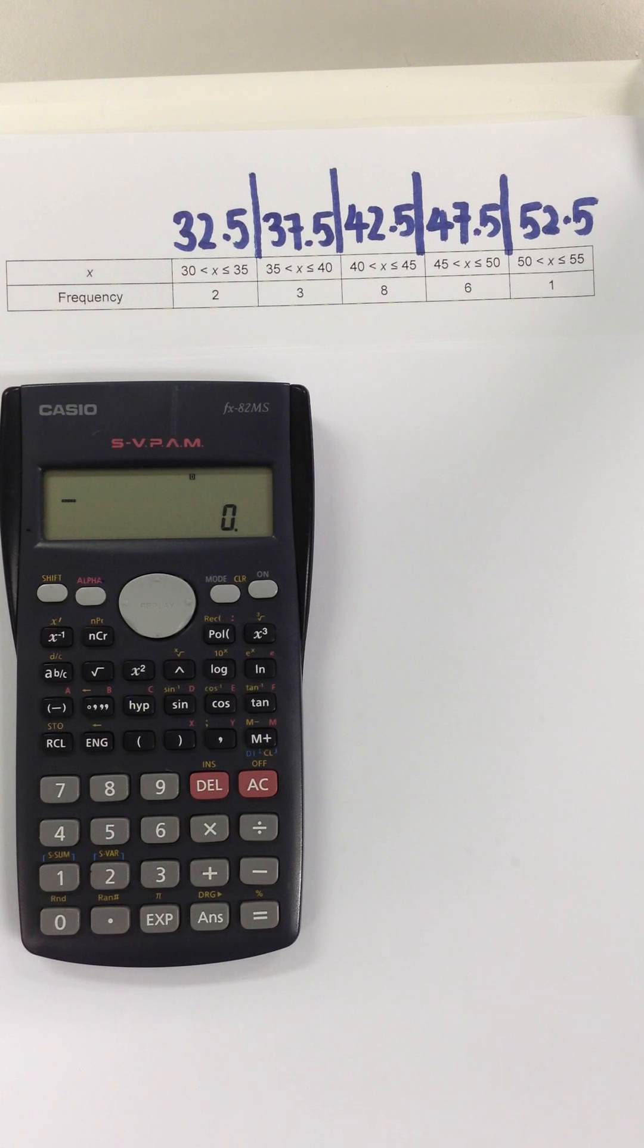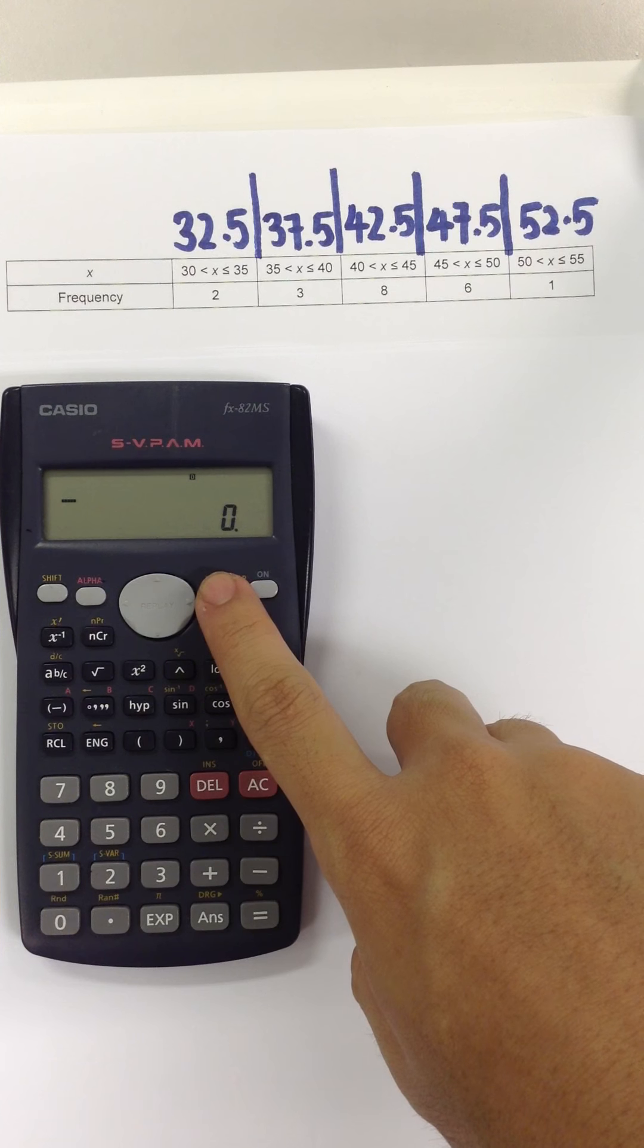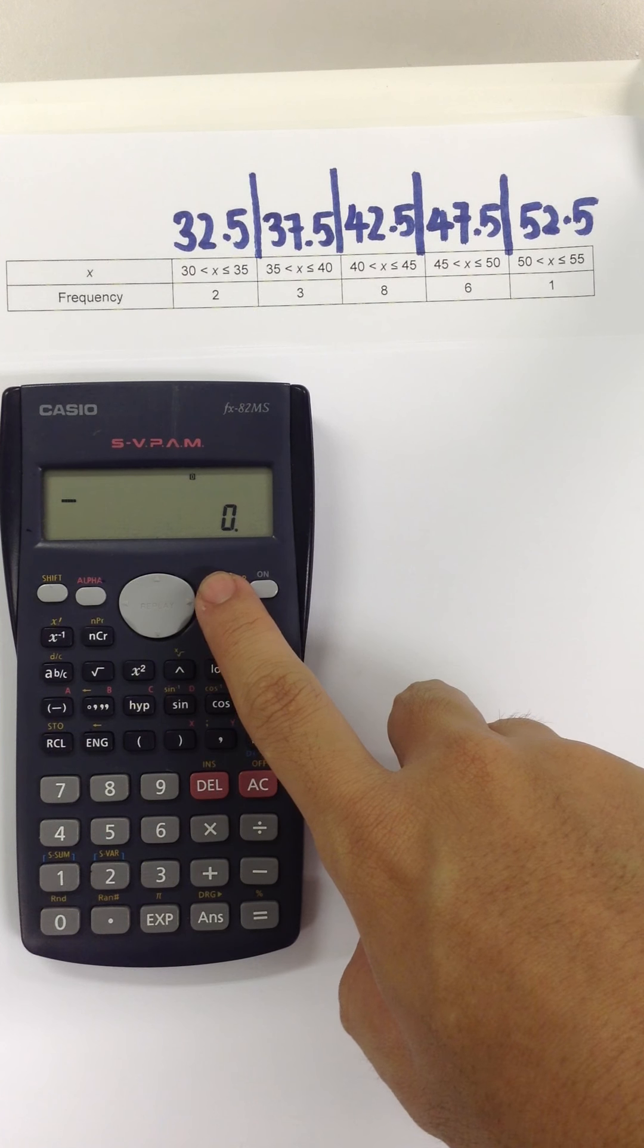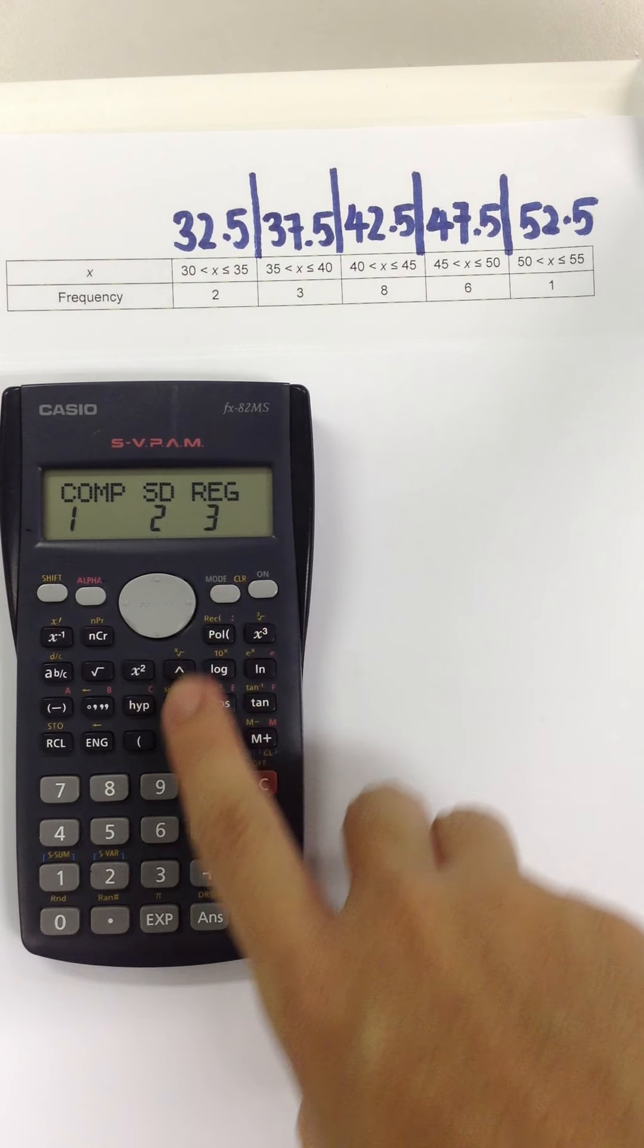To use the calculator to find the mean and the standard deviation, Step 1: Change the calculator mode to statistic mode. Press mode button, press 2.